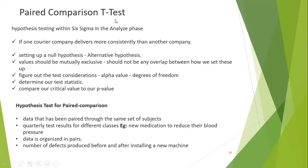For paired comparison using a t-test, the data must be paired through the same set of subjects. For example, we take a group of people and measure their blood pressure before and after giving new medication, to understand whether the medication reduces blood pressure. The data should be organized in pairs — a person's name paired with their blood pressure measurement.